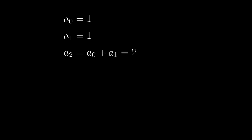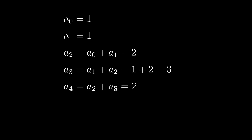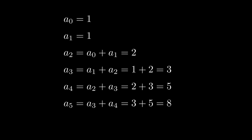Here is why a_6 = 13: we have a_0 = 1 and a_1 = 1, then a_2 = a_0 + a_1 = 2, a_3 = a_1 + a_2 = 3, a_4 = a_2 + a_3 = 2 + 3 = 5, a_5 = a_3 + a_4 = 3 + 5 = 8, and finally a_6 = a_4 + a_5 = 5 + 8 = 13.